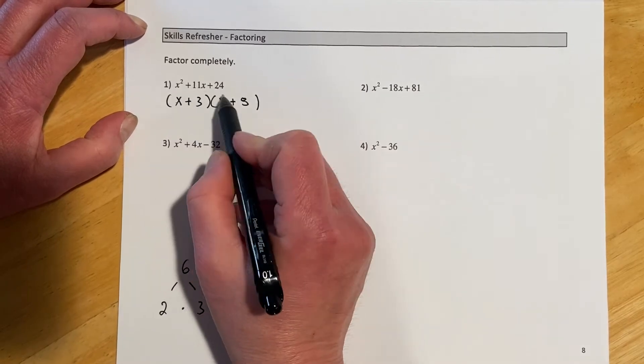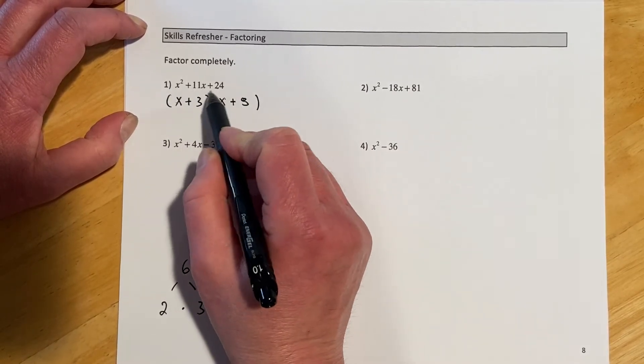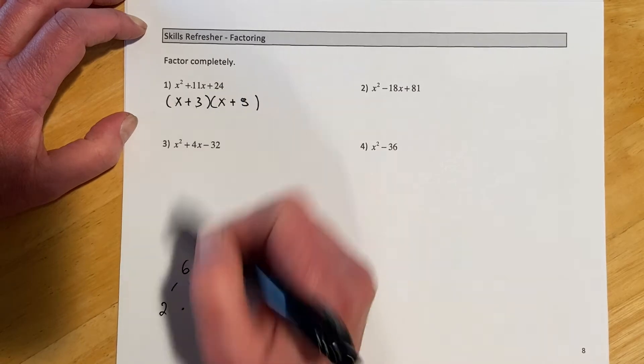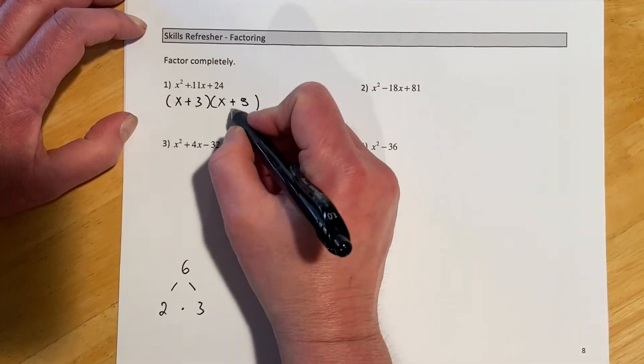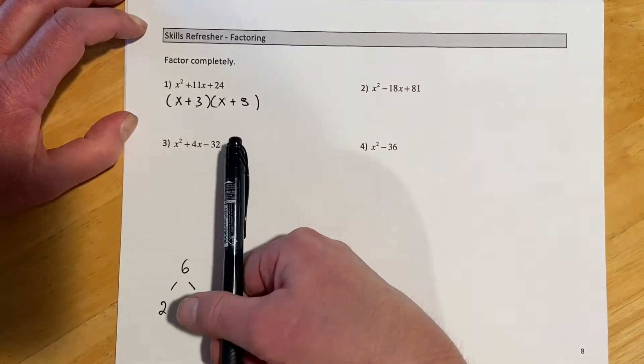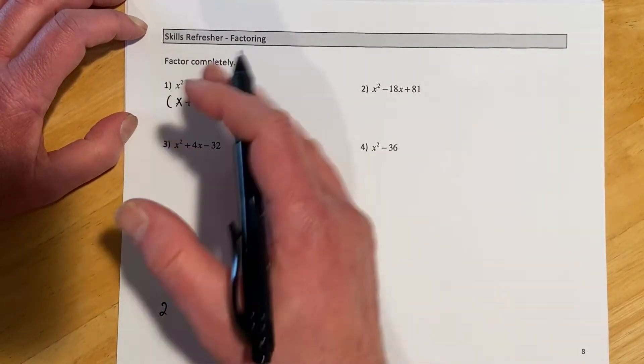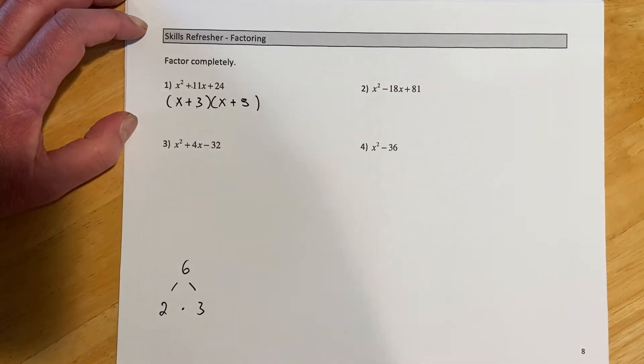And so if I FOIL that out I get my x squared, I get plus 8x plus 3x—that's the 11x—and then plus 24 on the end. So if I do that, that would be FOIL when I'm going this way. Again, that's called factoring, and it's a skill that'll pop up here and there throughout the quarter.